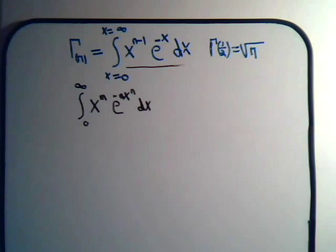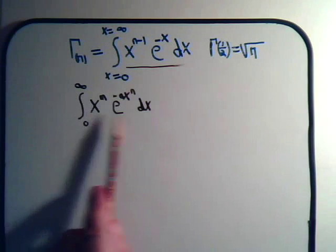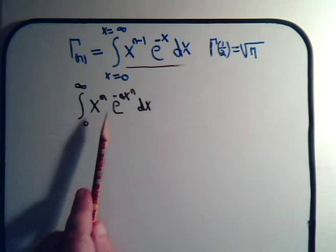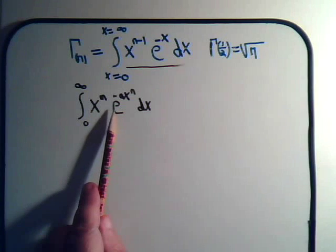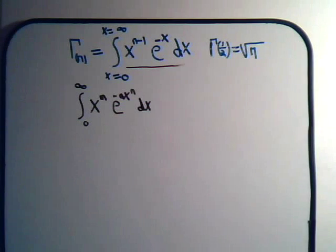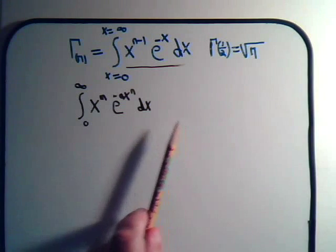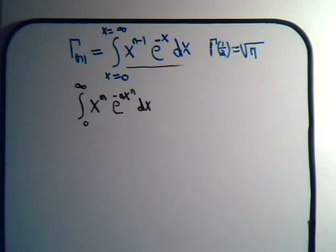So our hope is, if we use kind of a u-du substitution on this integral here, so this becomes e raised to some variable to the first power, will the rest of the integral fall in line and resemble a bona fide gamma integral that hopefully will give us a solution.